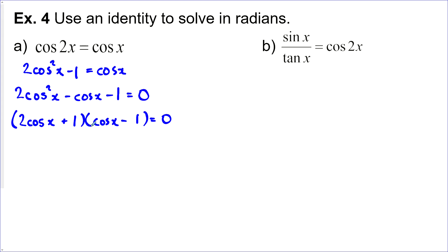So now I just need to solve each of these binomials separately. This one 2 cos x plus 1 is equal to 0 and this one cos x minus 1 is equal to 0.